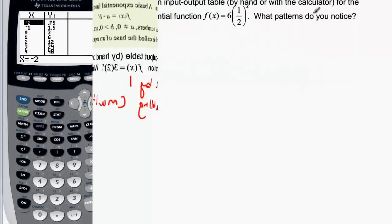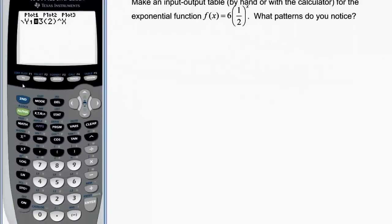Let's look at another example. Now we want to look at this function, and see if we can see the patterns that happen here. So we need to clear this one out, and put in six, and then in parentheses, I'm just going to put point five for that one half. Close the parentheses, caret x, and then go look at my table again.